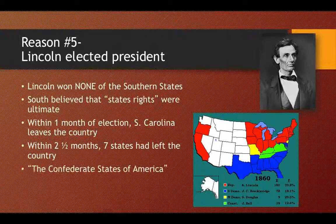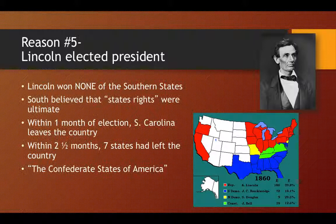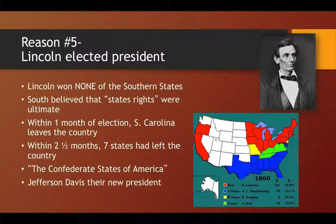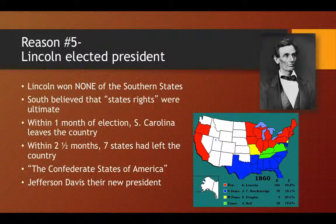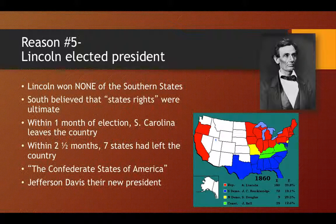The Southern states end up forming together and they create a new country called the Confederate States of America. They even elect Jefferson Davis as their new President. And again, poor Lincoln — there's nothing he can do. He's not officially the President, and these states have already taken off.